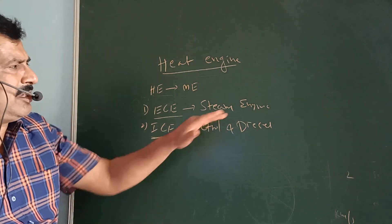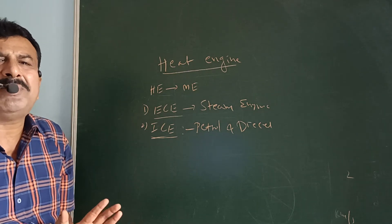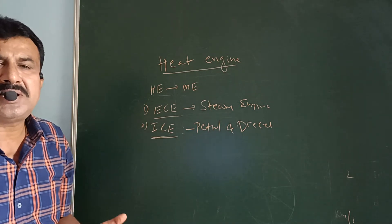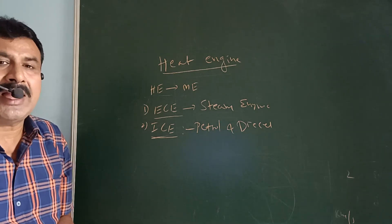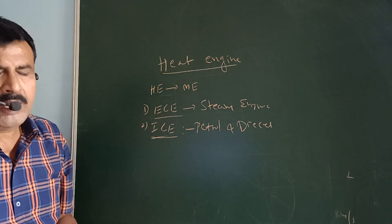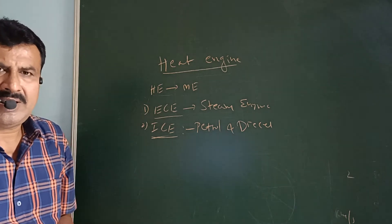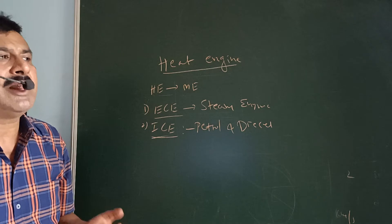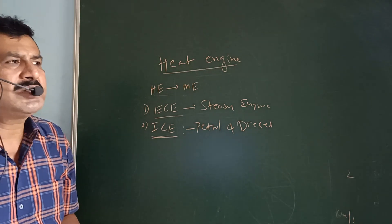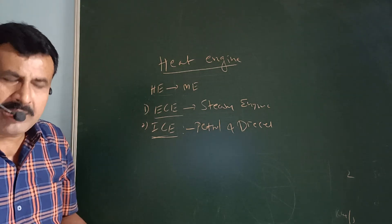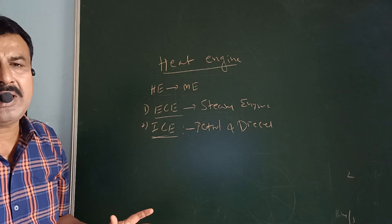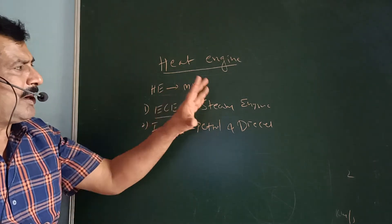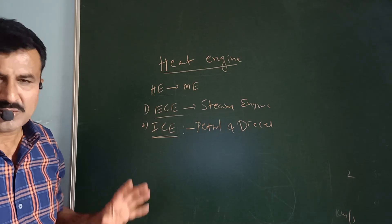Steam engines are outdated because the efficiency of the steam engine is very less — about 10 to 20 percent. But the efficiency of the internal combustion engine is nearly 50 to 70 percent. In a steam engine, a large amount of heat is lost and there is more friction, whereas in internal combustion engines, less heat is lost and there is less friction. Also, steam engines are bulky and bigger in size, but internal combustion engines are smaller. That's why steam engines are outdated.